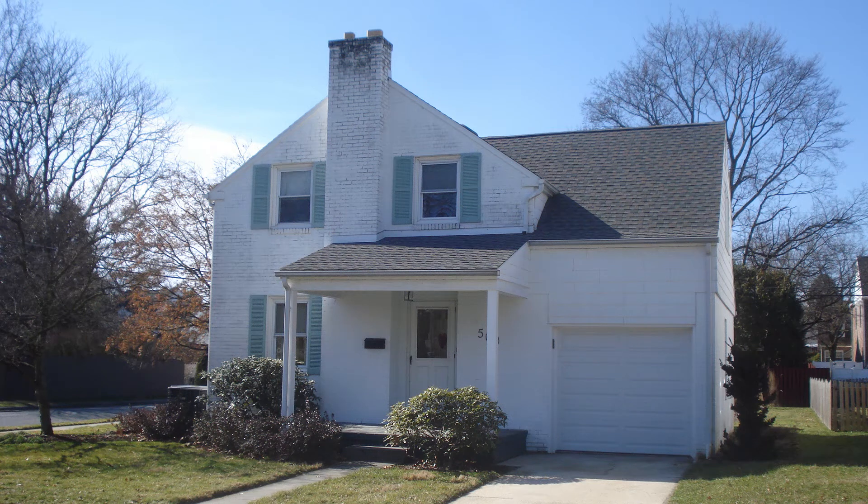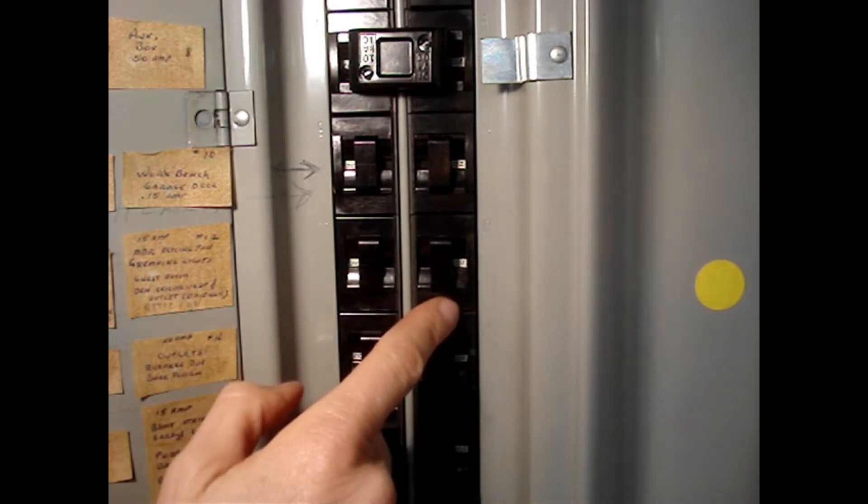I'm in the process of rewiring a house built in 1952. I've discovered that some three-way switches share a neutral on breakers 11 and 12.